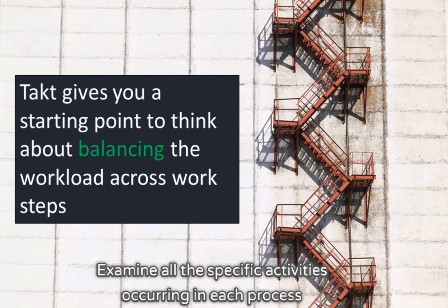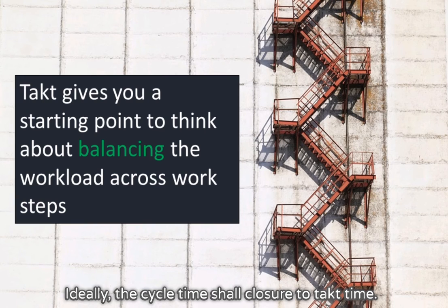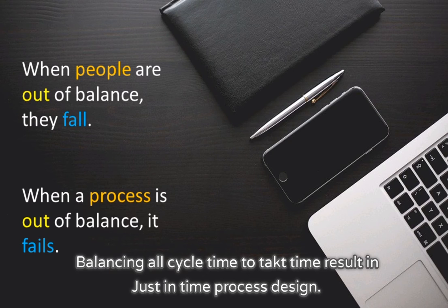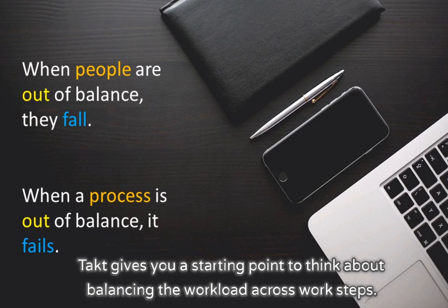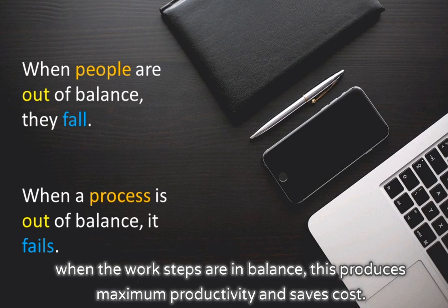Examine all the specific activities occurring in each process. Time studies, motion studies, and other lean tools often provide most of the ideas for improvement. Ideally, the cycle time shall be close to tack time. Tack gives you a starting point to think about balancing the workload across work steps. Producing to the pace of customer demand — no faster, no slower — when the work steps are in balance, this produces maximum productivity and saves cost.